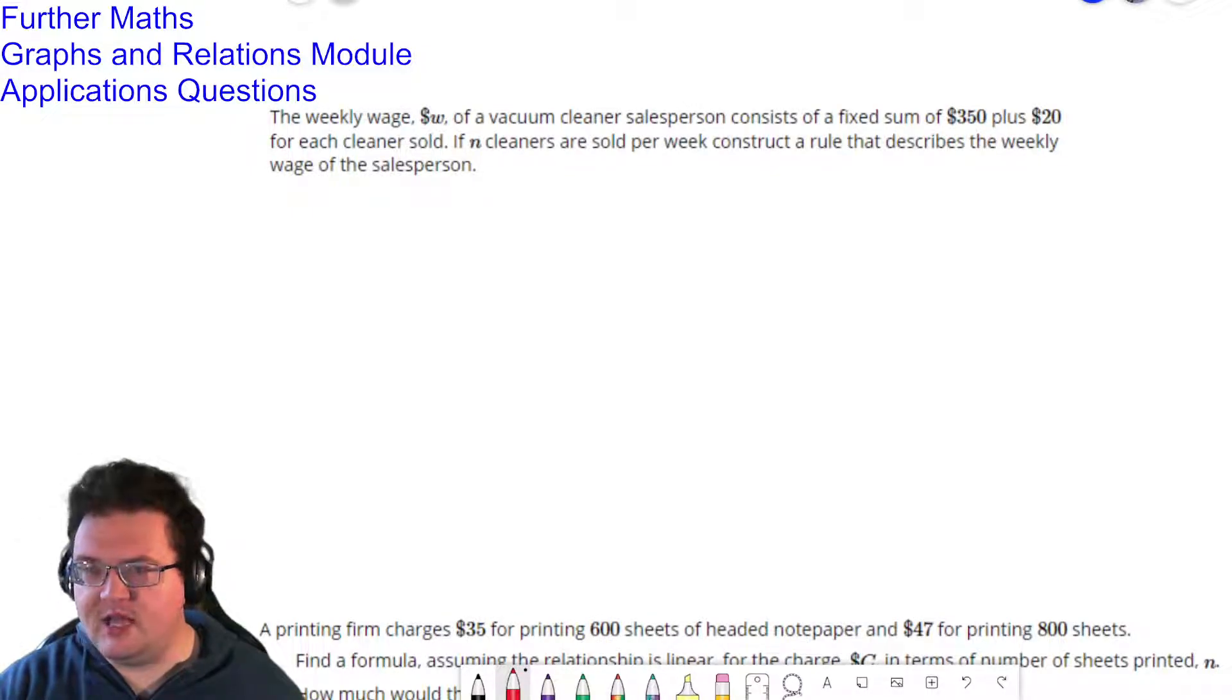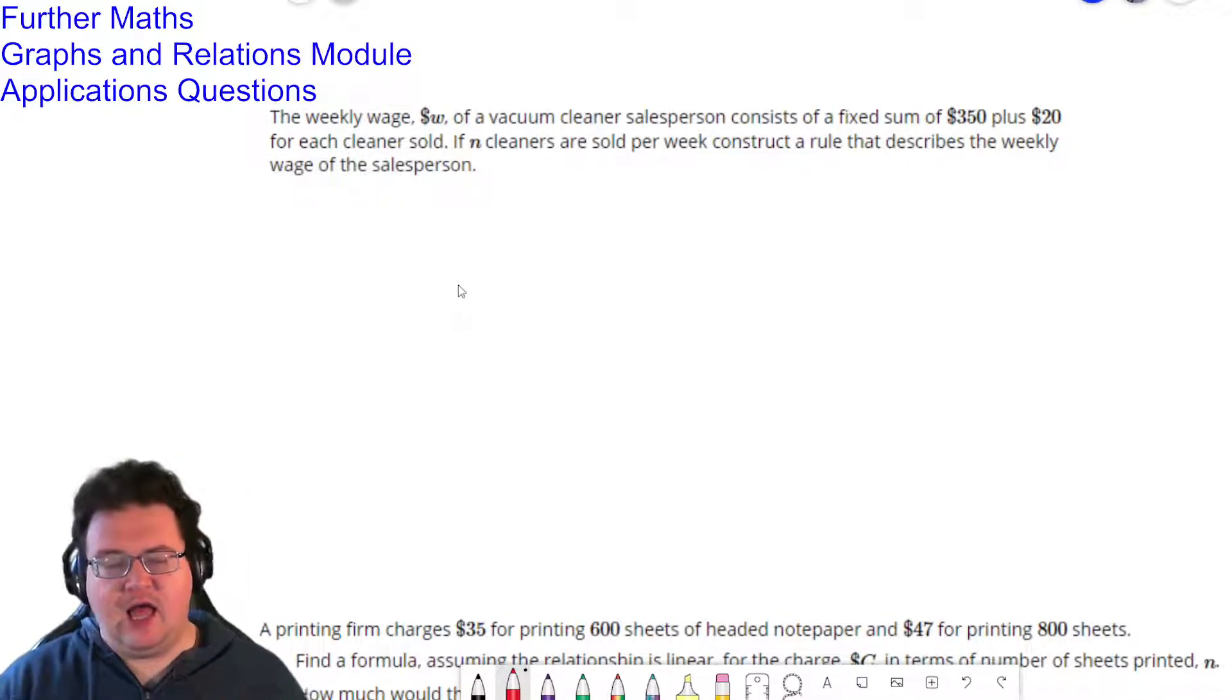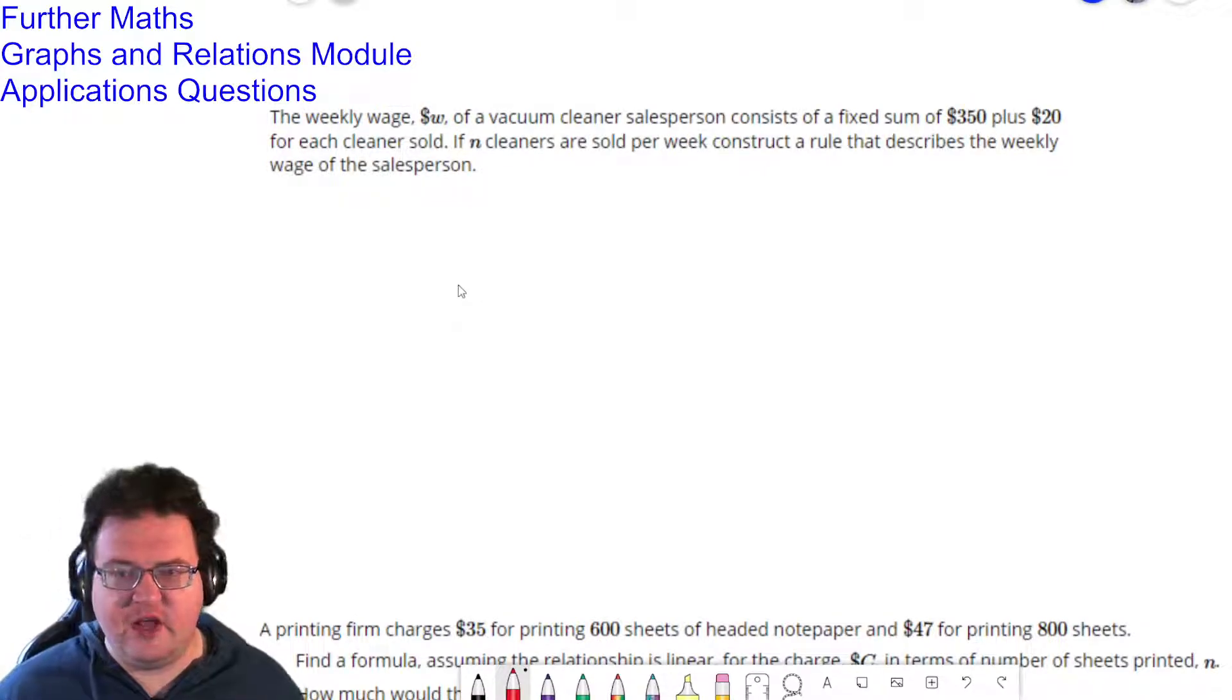Good morning everyone. Today we're looking at application questions for the graphs and relations module in Further Maths. These are questions taken straight out of the textbook. I'm going to go through and explain how to work through them and create the answers. So first question here, the weekly wage W dollars of a vacuum cleaner salesperson consists of a fixed sum of $350 plus $20 for every cleaner sold. If N cleaners are sold per week, construct a rule that describes the weekly wage of the salesperson.